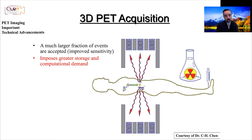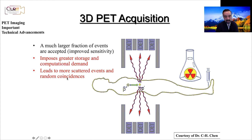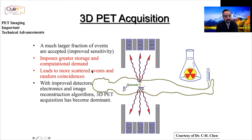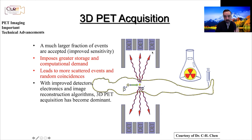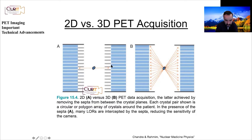With improved detectors, faster electronics, and better reconstruction algorithms that model and correct for scatter and randoms, the field naturally switched to 3D PET acquisition. PET has electronic collimation through coincidence detection, so there is no need for physical septa between rings. Vendors have primarily switched to 3D PET acquisition, and sensitivity has increased significantly as a result.